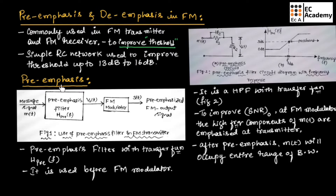Let us understand pre-emphasis. Figure 1 shows the use of a pre-emphasis filter in an FM transmitter. Before the FM modulator, the pre-emphasis filter will be used, and the transfer function of this pre-emphasis filter will be H_P(f).